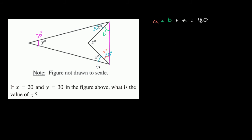And what else do we know? Well, a plus x is this whole angle right here. So a plus x is this whole angle right there, and then we have plus b plus x, which is this whole angle over here.